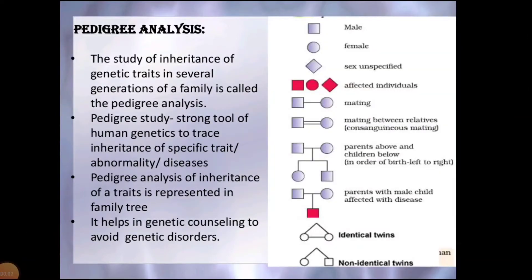It is not possible to perform genetic experiments in human beings the way they were done in peas or other organisms. But human heredity is very important from the biological and medical points of view. Humans have a long generation time and often produce a much smaller number of offspring. To study the inheritance of a trait, pedigree analysis is done, where information about the family is collected and assembled like a family tree.